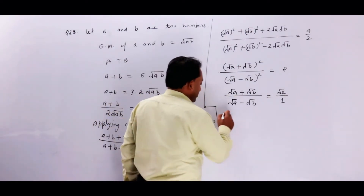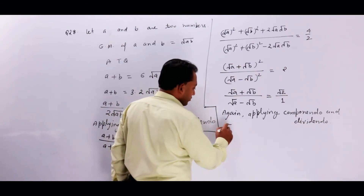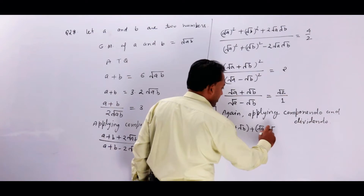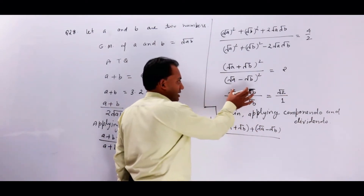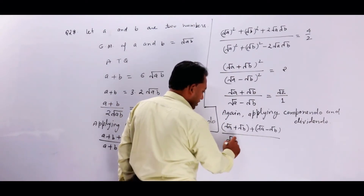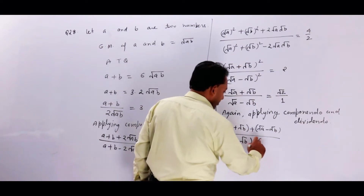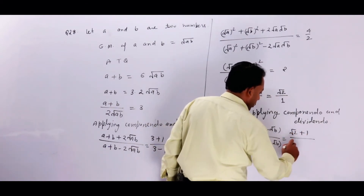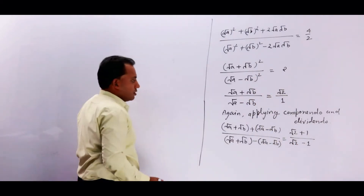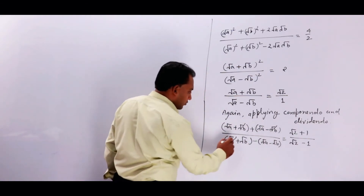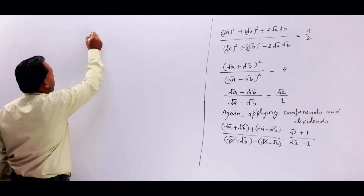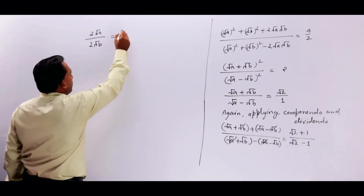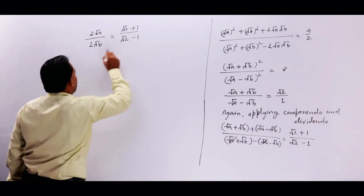Again applying componendo and dividendo, तो यह कुछ ऐसा हो जाएगा: (√A + √B + √A − √B) upon (√A + √B − √A + √B) = (√2 + 1) upon (√2 − 1)। तो आप देख पा रहे हैं कि √B से √B cancel और √A से √A cancel। ऊपर हो जाएगा 2√A और नीचे हो जाएगा 2√B।